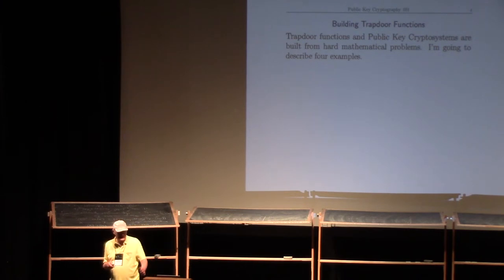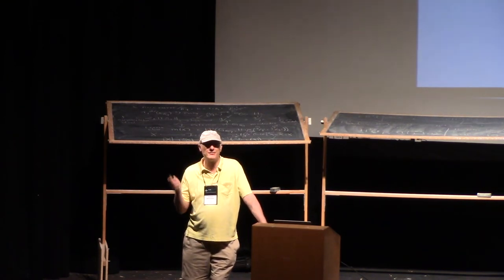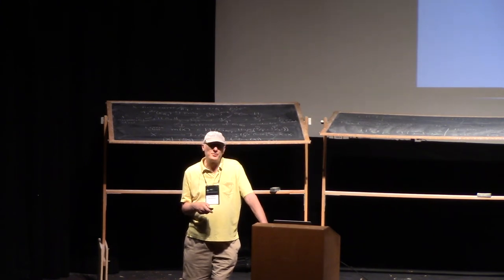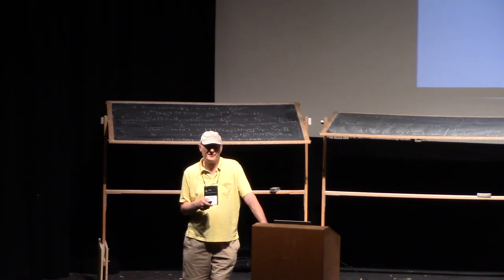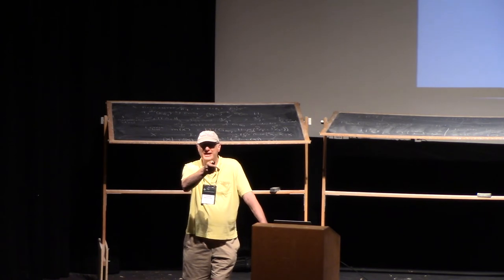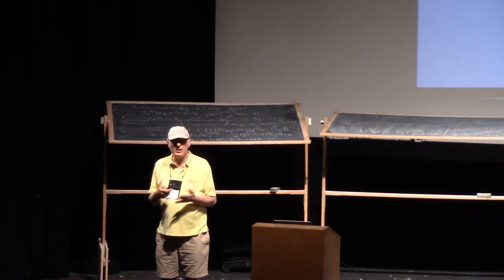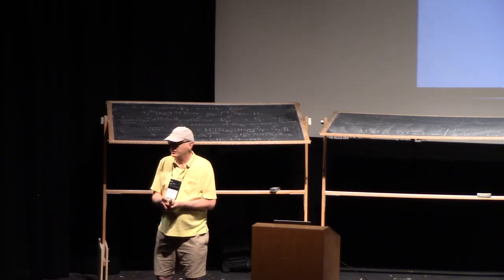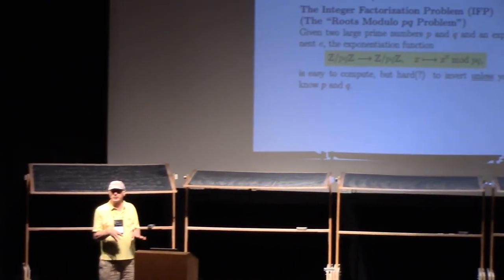How do you build these things? They're generally based on hard math problems. It's very easy to write down a hard math problem — in fact it's easy to write down math problems we don't even know how to solve. The trick is we want them to have this trapdoor property: with some extra information you can solve it, and without it you can't. So you want a hard math problem such that if I give it to you, you can't solve it, but if I give it to the person next to you with this extra information, it's really easy for them to solve. I'm going to go through four hard problems that are currently used to build crypto systems.